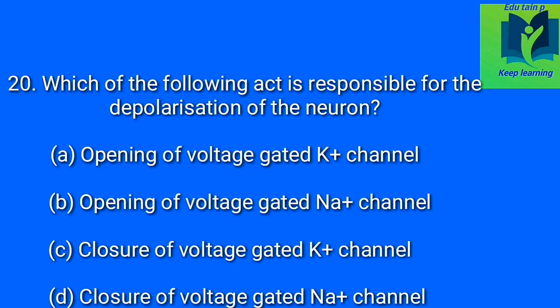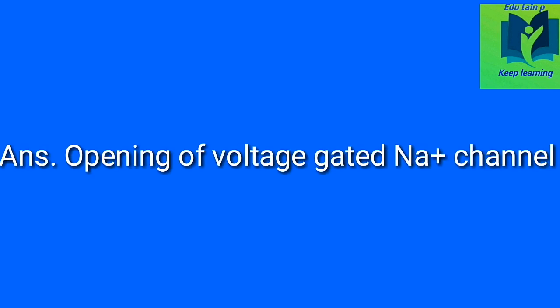Which of the following acts is responsible for the depolarization of the neuron? Option A: opening of voltage-gated K+ channel. Option B: opening of voltage-gated Na+ channel. Option C: closure of voltage-gated K+ channel. Option D: closure of voltage-gated Na+ channel. Answer: opening of voltage-gated Na+ channel.